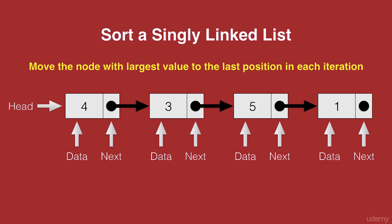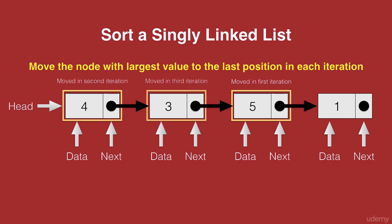So in the first iteration, we move 5 to the end of the list. In the second iteration, we move 4 to the last second position. In the third iteration, we move 3 to the last third position. And now that all the other nodes have been moved, the node with data 1 is left at the first position and we have a sorted list.